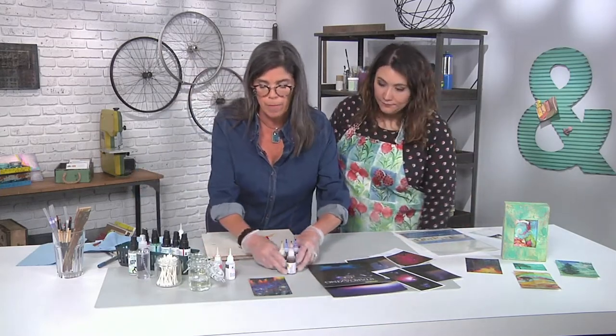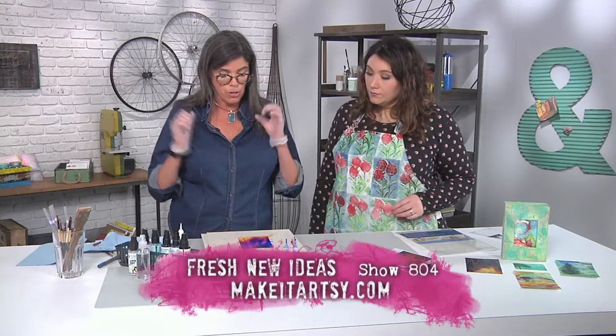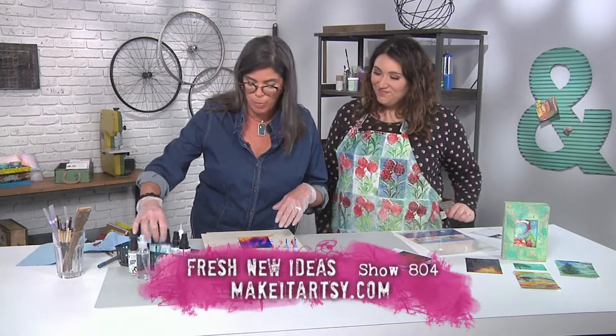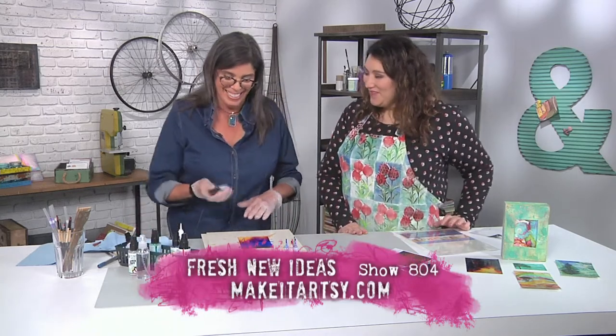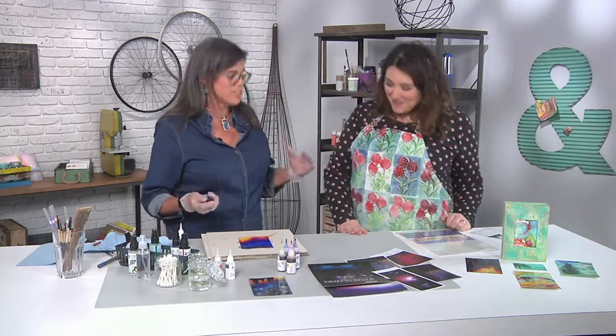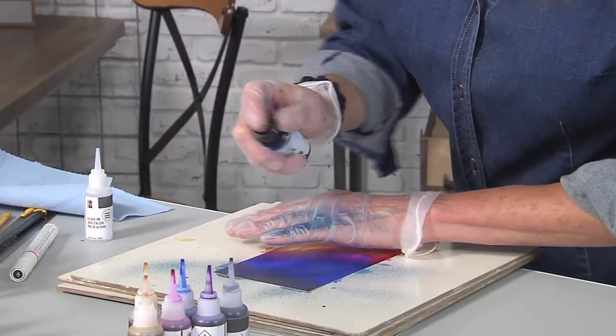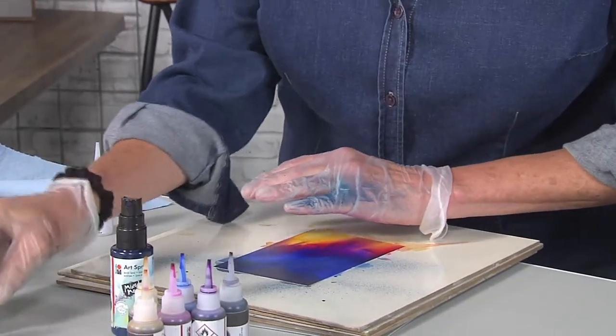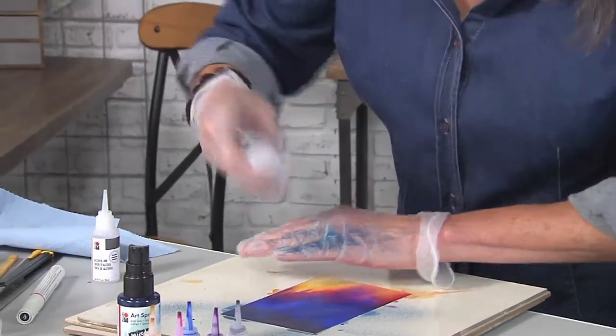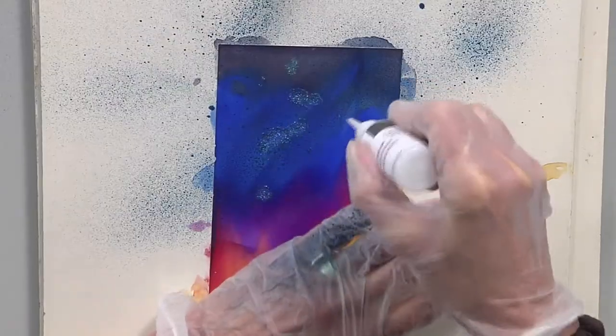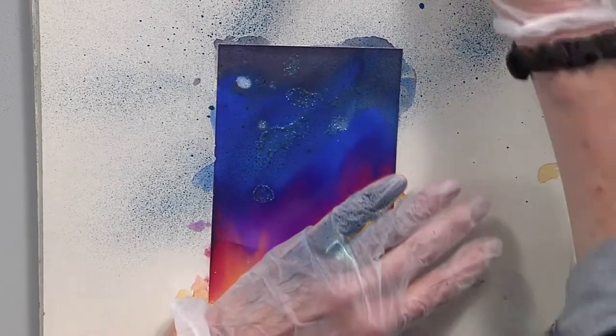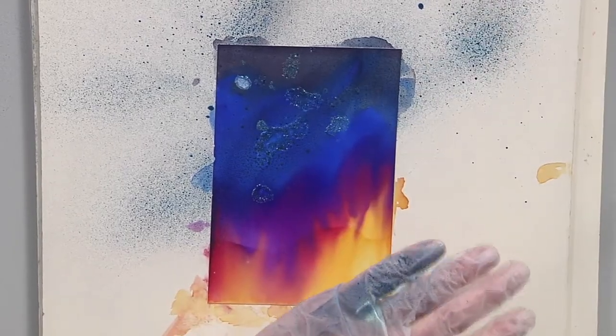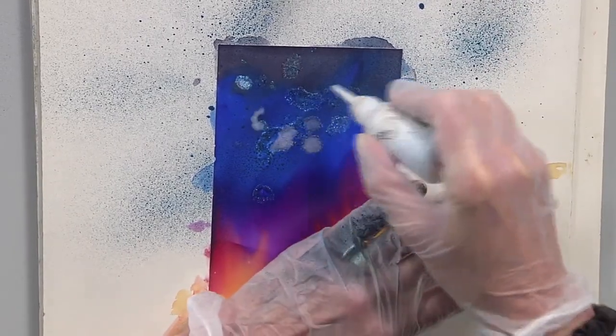So now we get into the fun part. We are going to start squirting on some art spray. I thought it was pretty fun already. It gets better than this. So I'm using my hand just as a shield, a reason to wear gloves. And then I'm going to drop in some of this rainbow, which is an additive that gets iridescent and adds to any color.